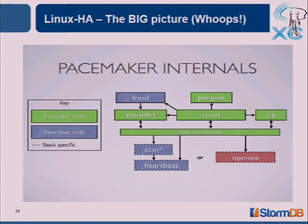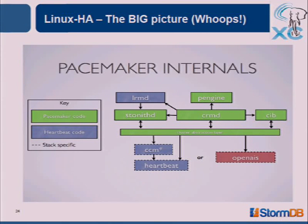The internals are a bit complex. There's a local resource manager daemon, a Stonith daemon if configured, a configuration management daemon, and the configuration information base stored in XML format in Pacemaker. There are the messaging layers — CoroSync (OpenAIS) and Heartbeat. CoroSync has been gaining more traction compared to Heartbeat. Heartbeat is kind of in maintenance mode — still actively maintained, but CoroSync with Pacemaker is the stack people tend to prefer nowadays.